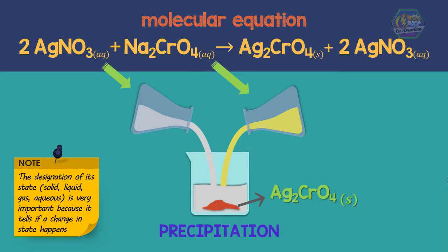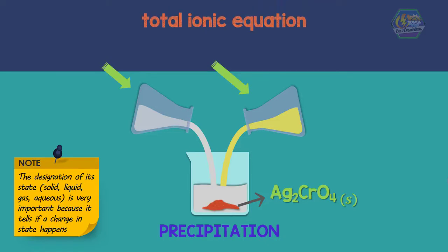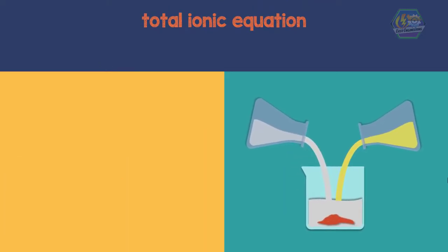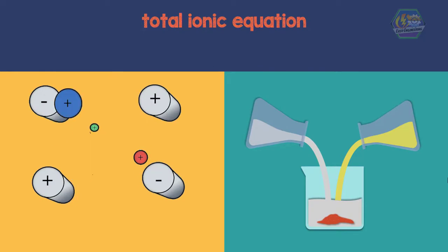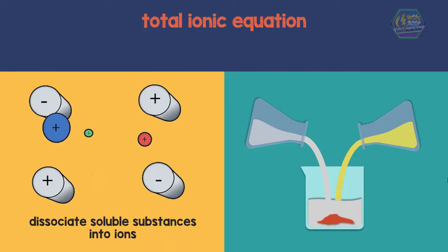The next equation is called the total ionic equation. Here we must dissociate soluble substances into ions. This is more accurate than other kinds of equations. The solid substance is the only undissociated compound.